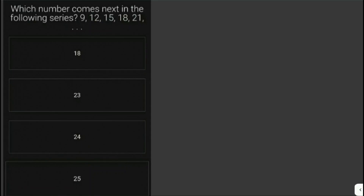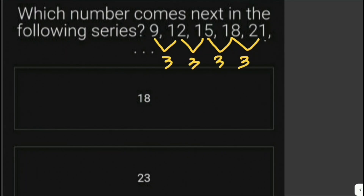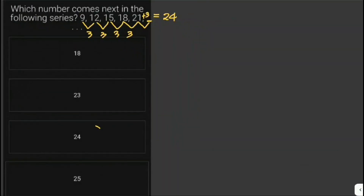Let's solve another problem. Which number comes next in the following series: 9, 12, 15, 18, 21? In series and sequences, let's look at the common difference. The difference between 9 and 12, 12 and 15, 15 and 18, and 18 and 21 is 3. Therefore we add 3 to 21 to get the next number, which is 24. So this is our answer.